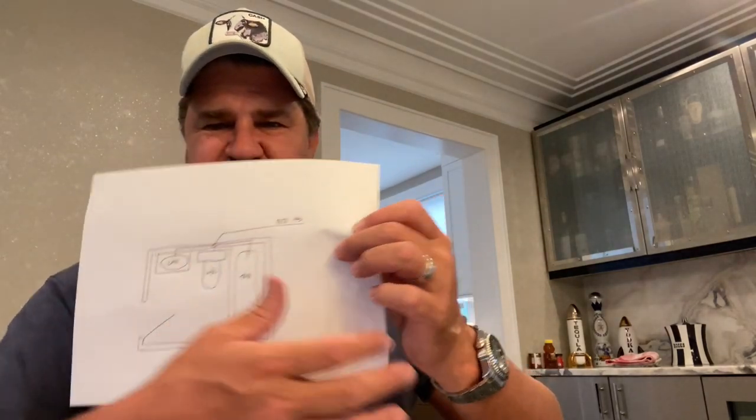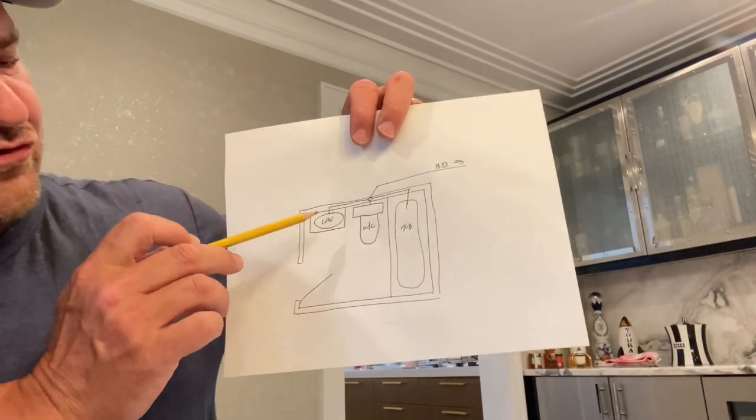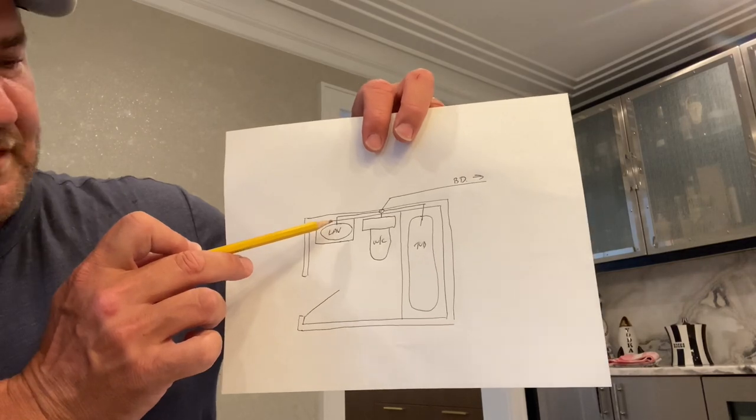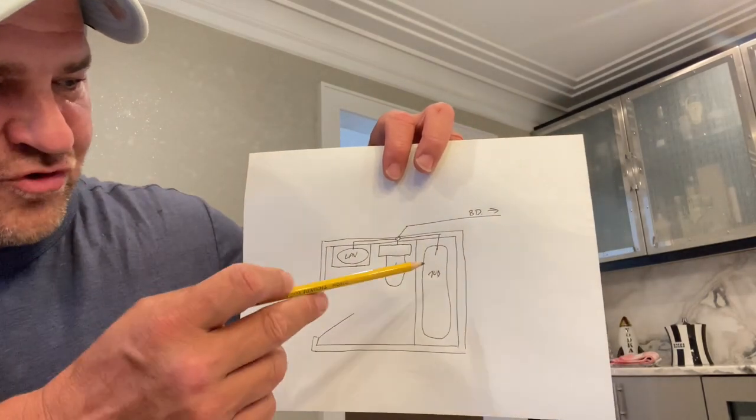Number three: elevation. Perfect example, right? We all know that the trap for a laboratory is not going to be at the same elevation on your isometric drawing as a tub. It's not.